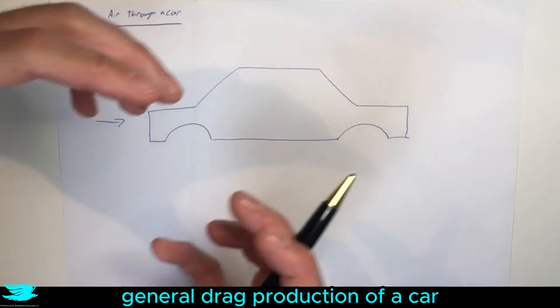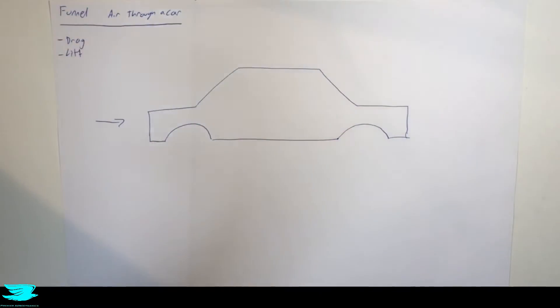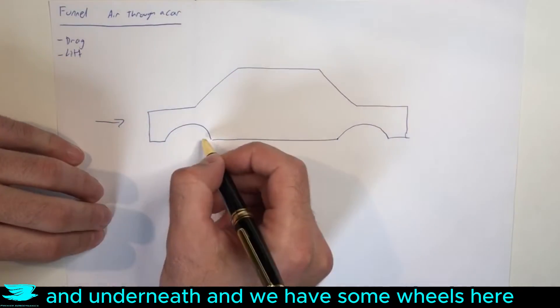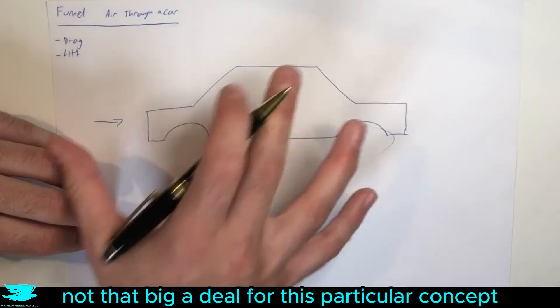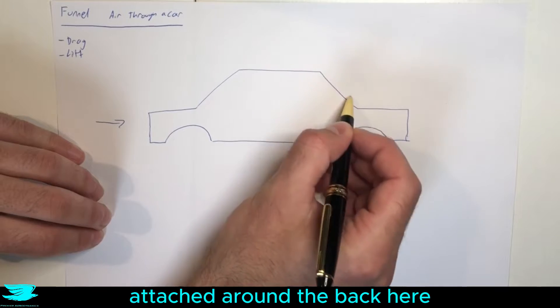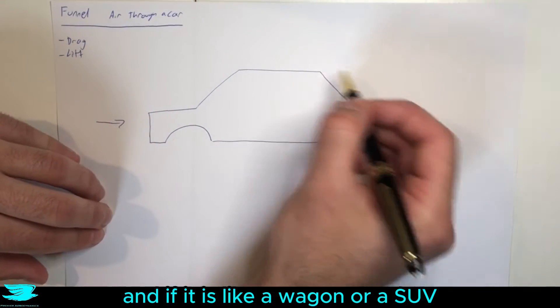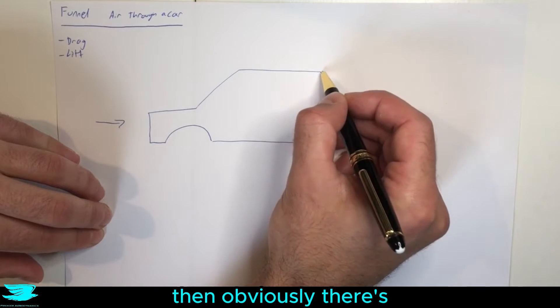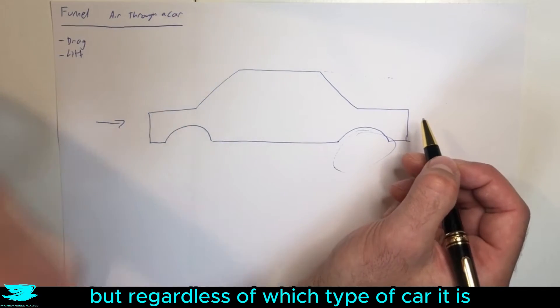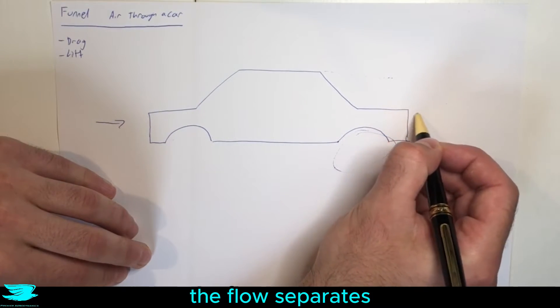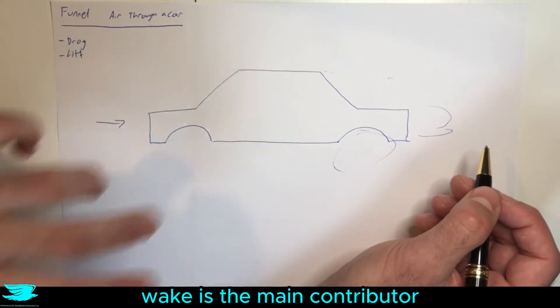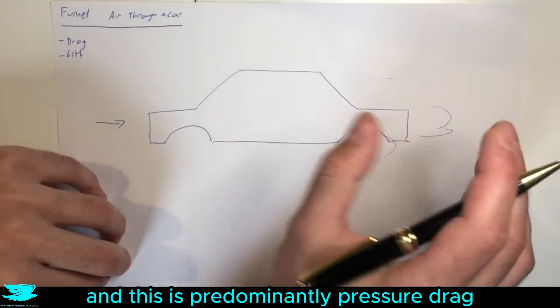If you don't know about the general drag production of a car, check out this video here where we go through pressure drag. Generally speaking we have the flow coming over the top here and underneath, and we have some wheels here. For a typical car, generally we want the flow to stay attached around the back here. Regardless of which type of car it is, once it gets to the back here the flow will separate and we'll start to get quite a large wake. This wake is the main contributor to the drag of the car and this is predominantly pressure drag.